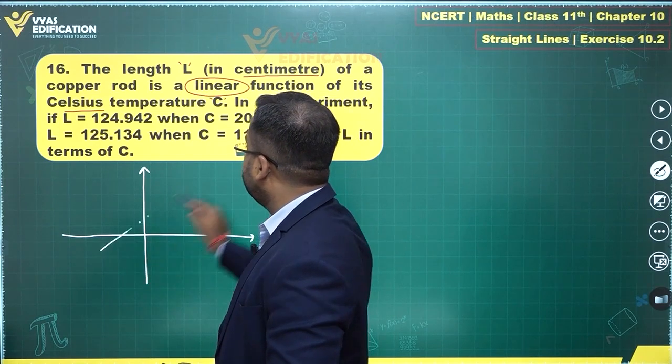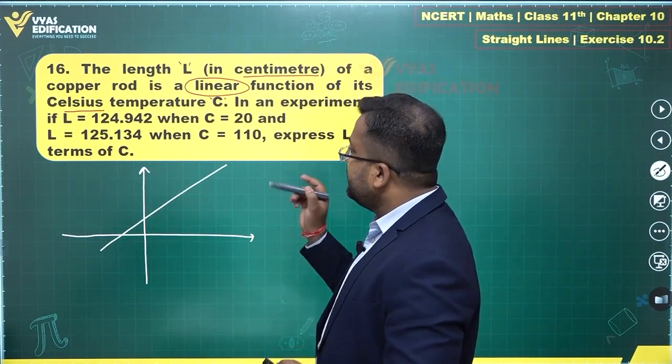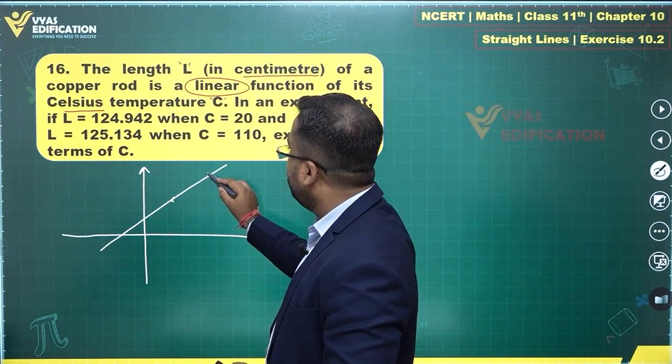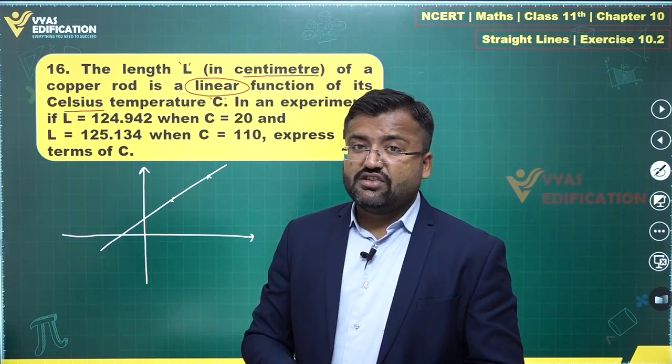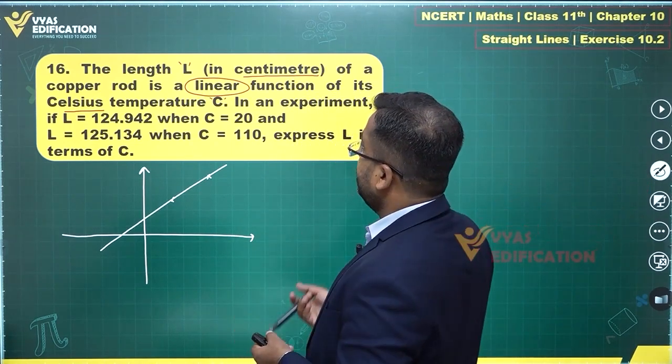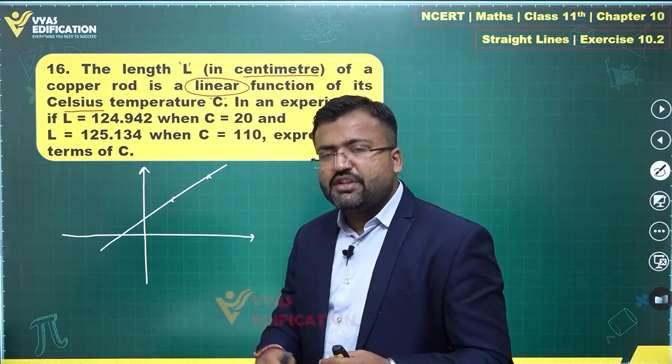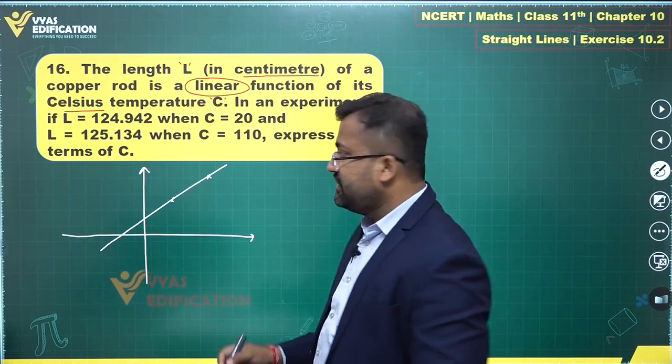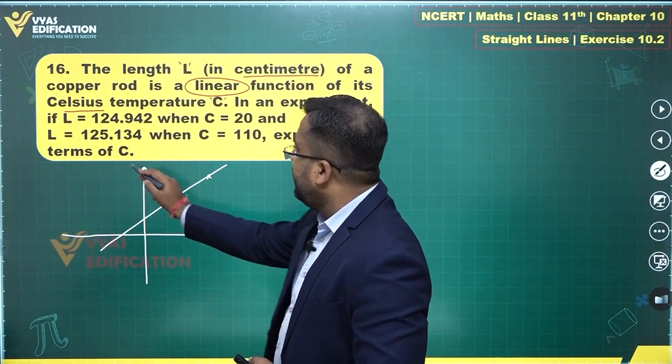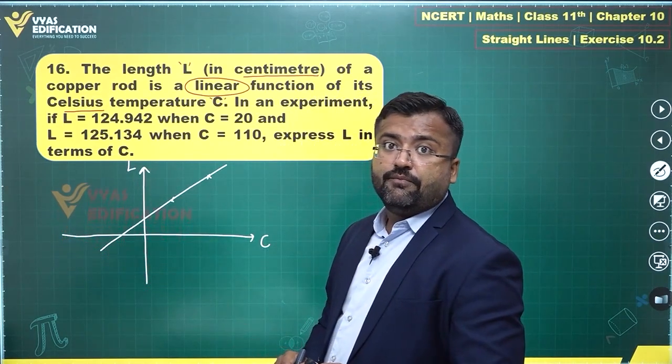Straight line kind of this. And on this straight line you are given two points. Which axis will be the X axis? Let's take—we can change the temperature, so let's take temperature as an independent function. On the basis of temperature, the length changes. So let's mark C over here, let's mark L over here.